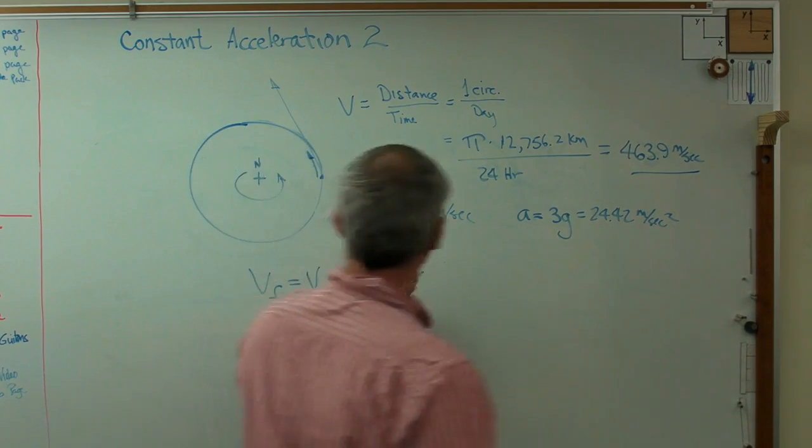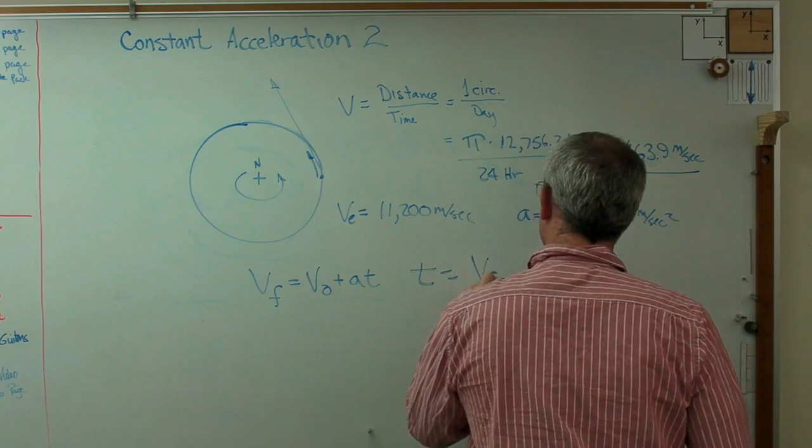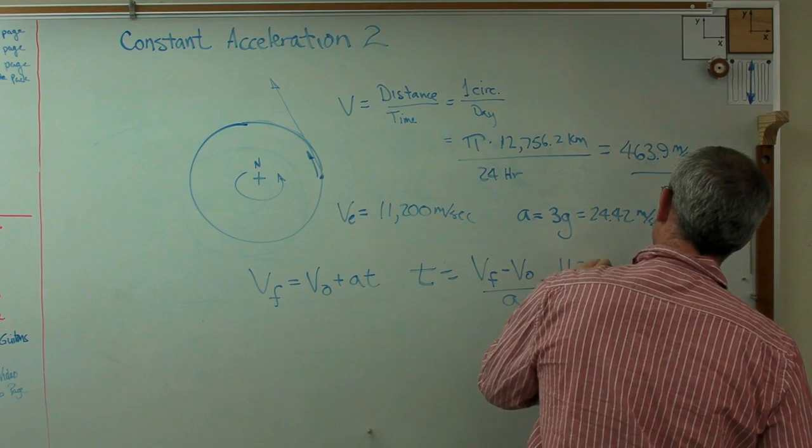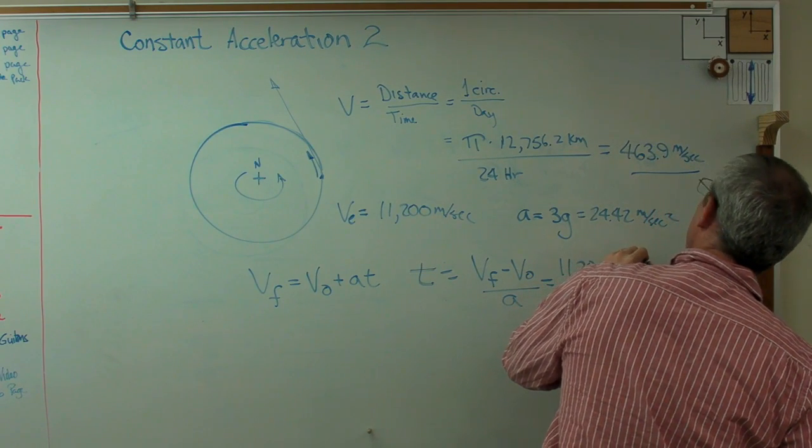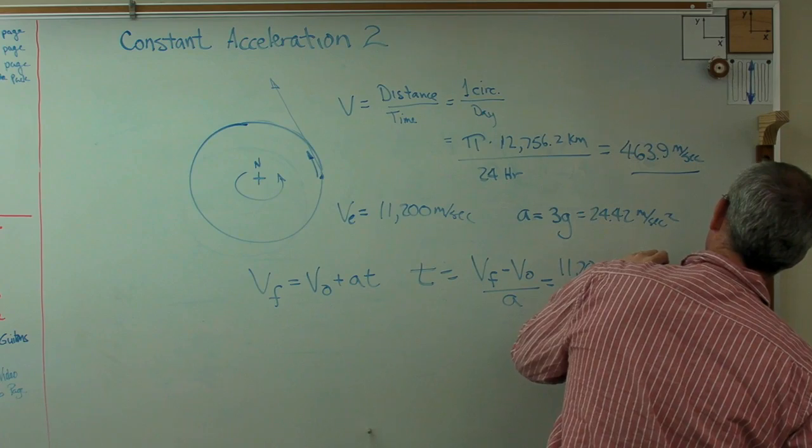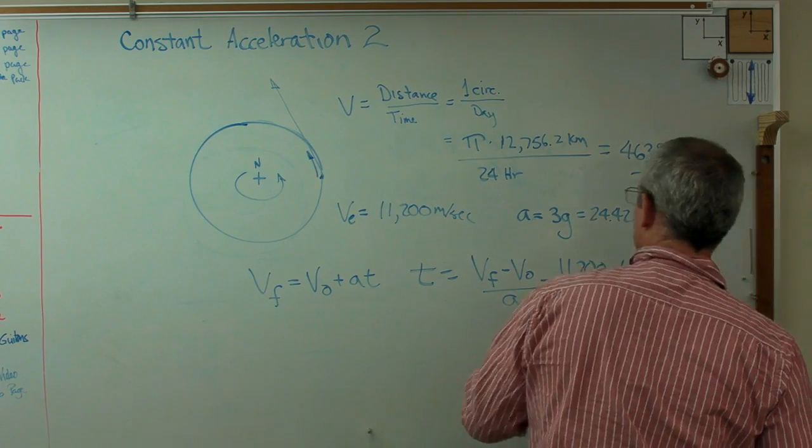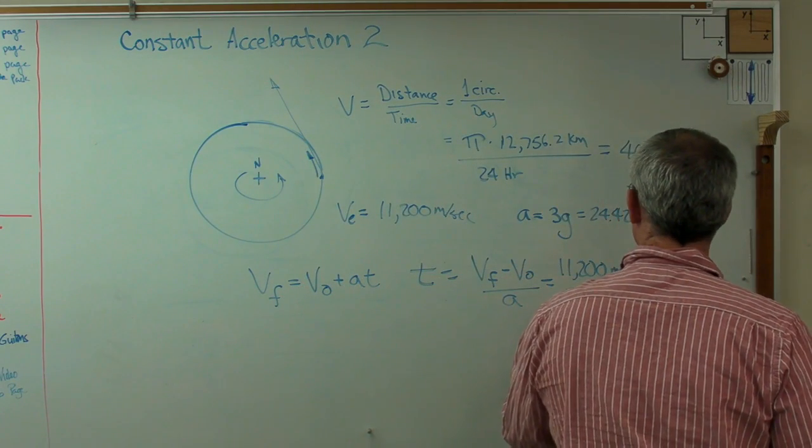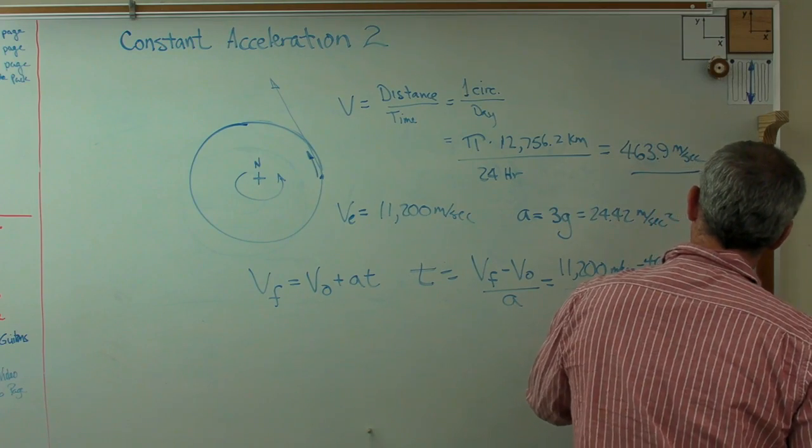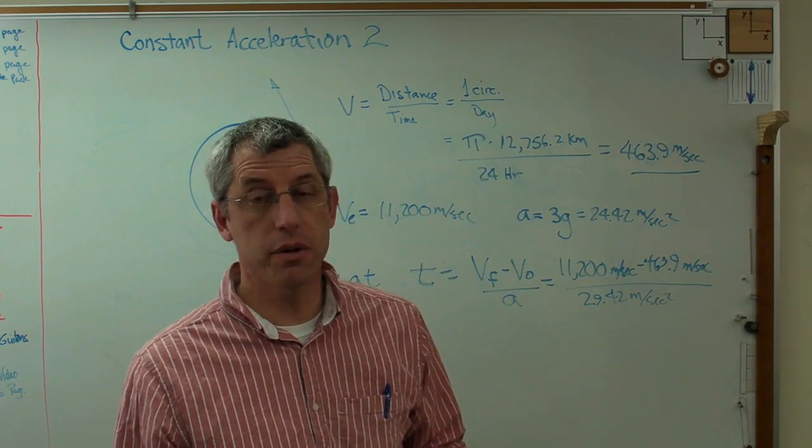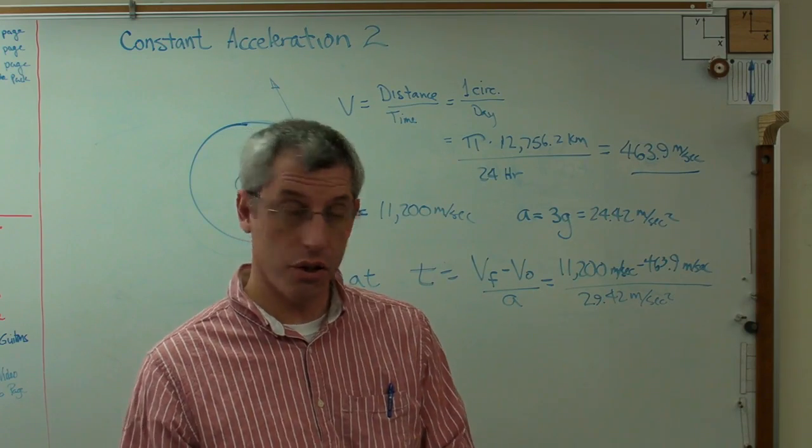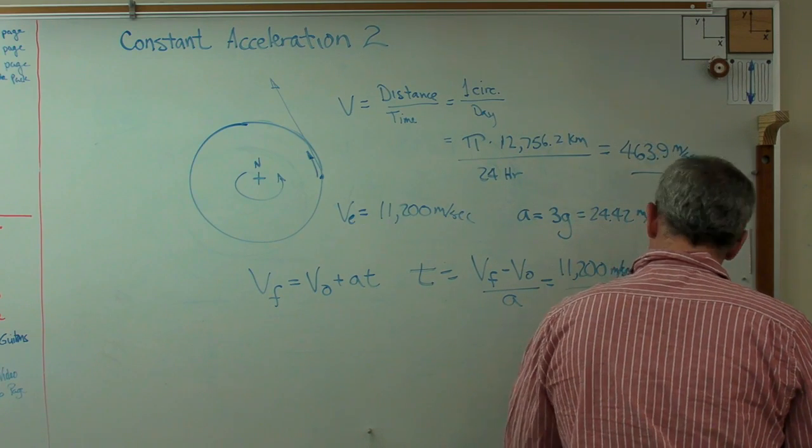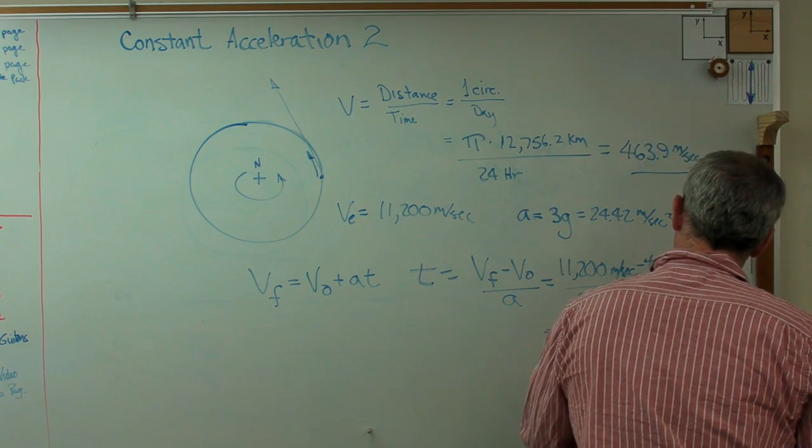I'm going to solve this for t. Time is v final minus v zero over a. That's 11,200 meters per second minus 463.9 meters per second, all over my rate of acceleration, which is 29.42 meters per second squared. Meters per second divided by meters per second squared gives me seconds. Units work out.